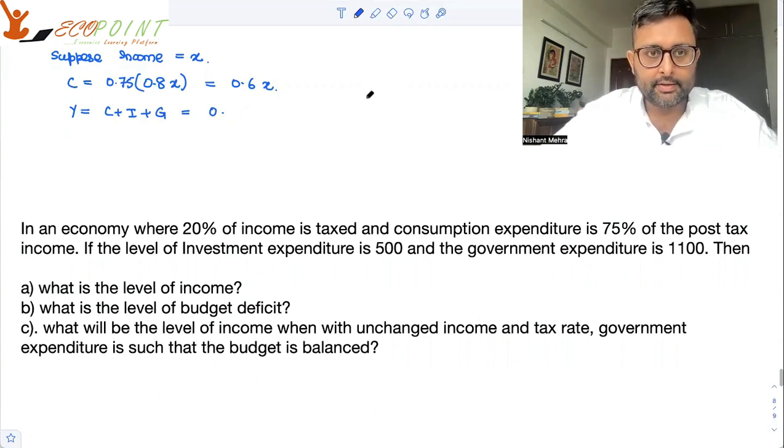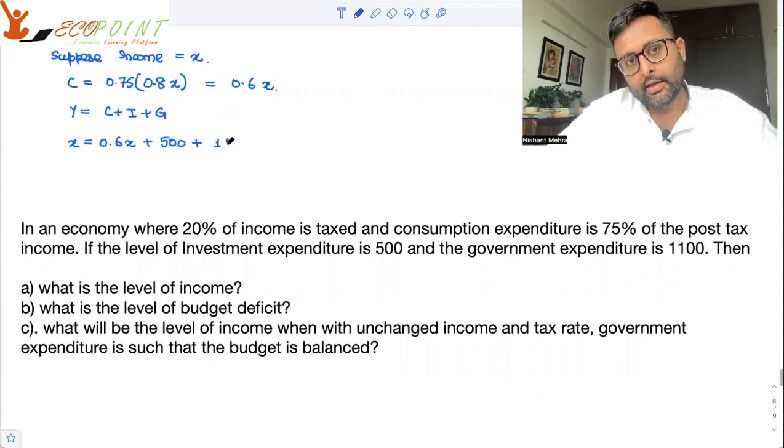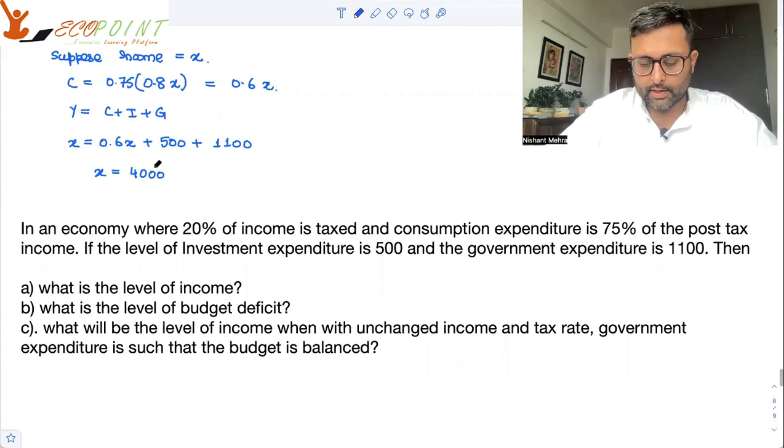I'll write it in the next slide. We have taken income as X. Consumption is 0.6X. Investment is 500. And the government expenditure is 1100. X will come out to be 4000.